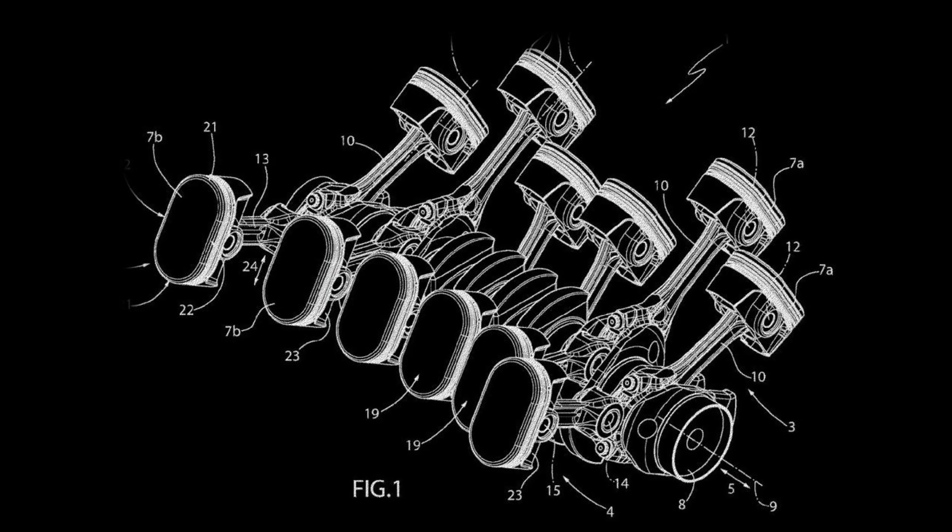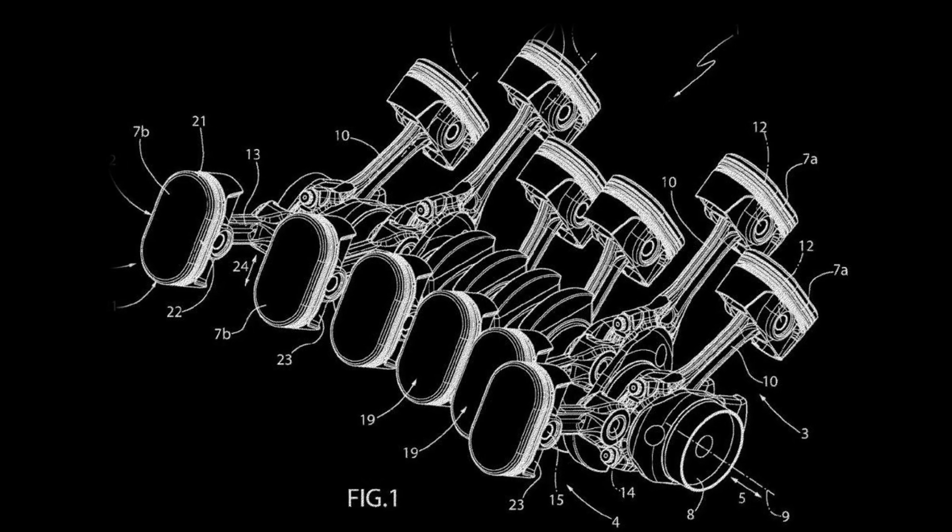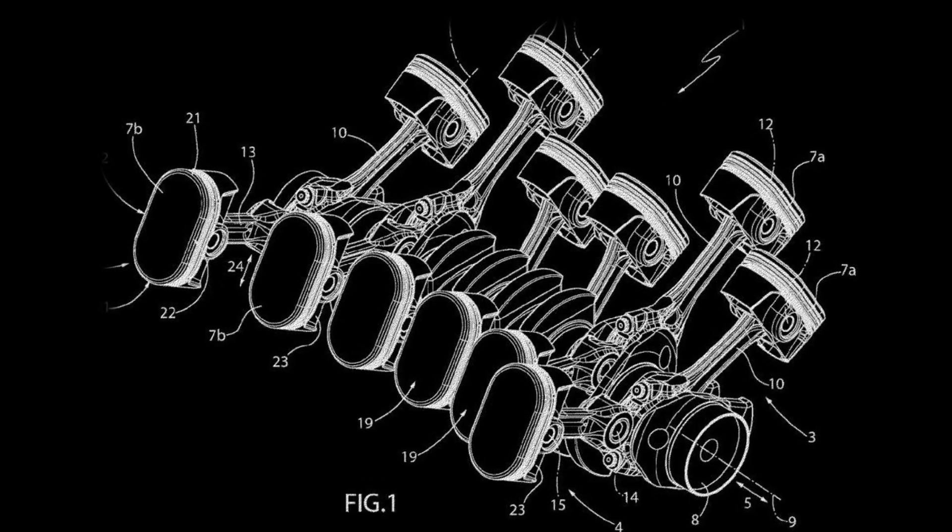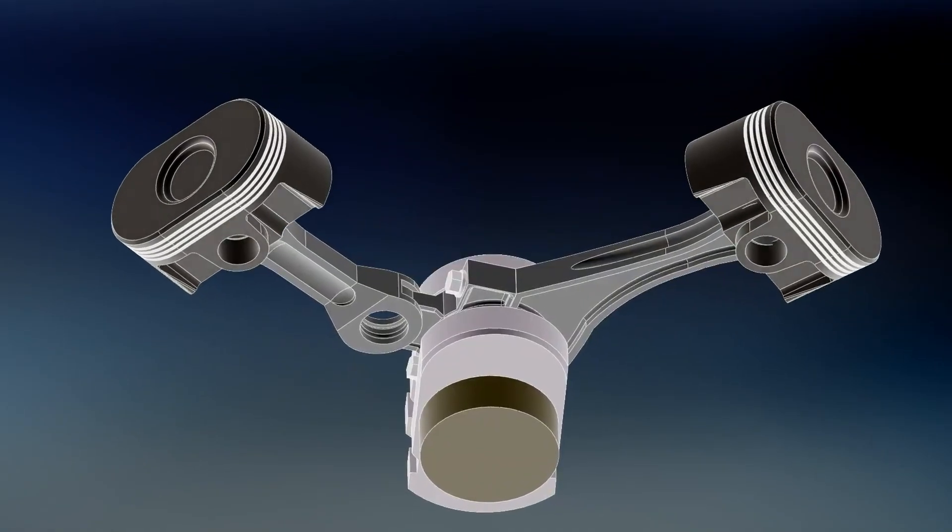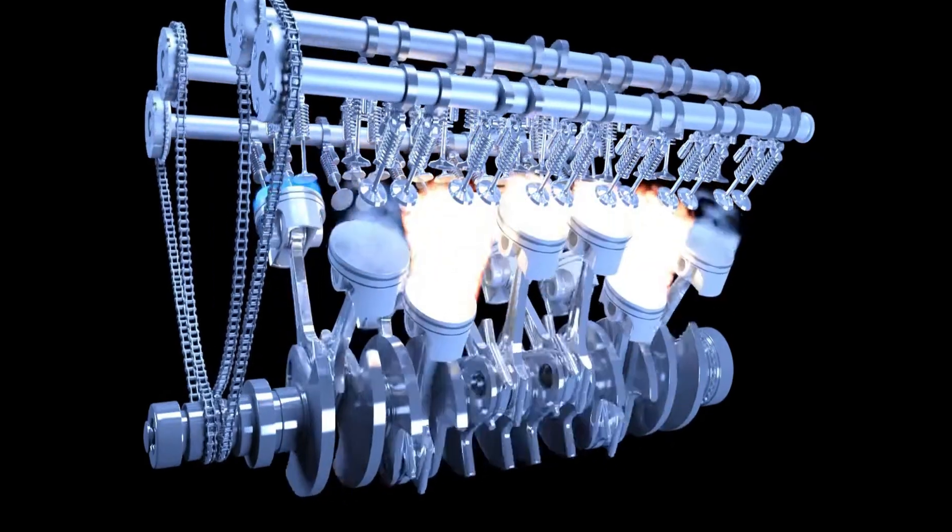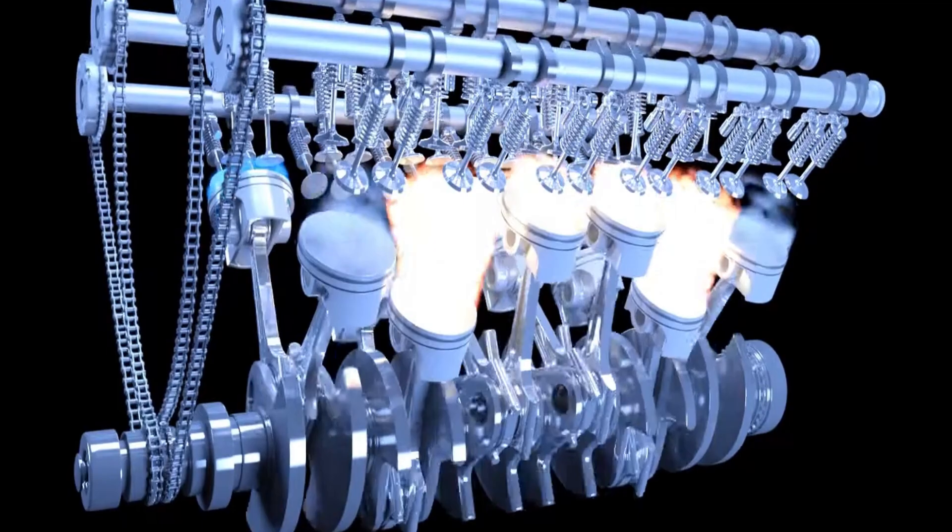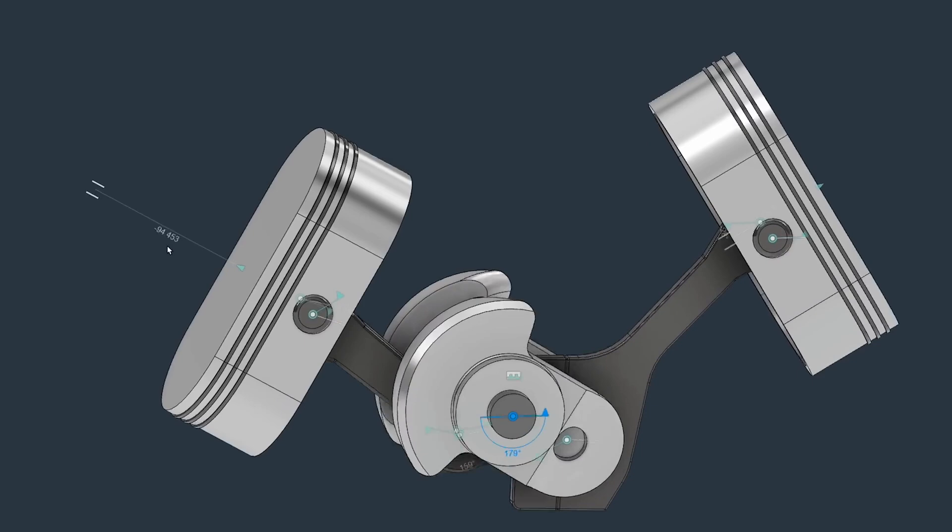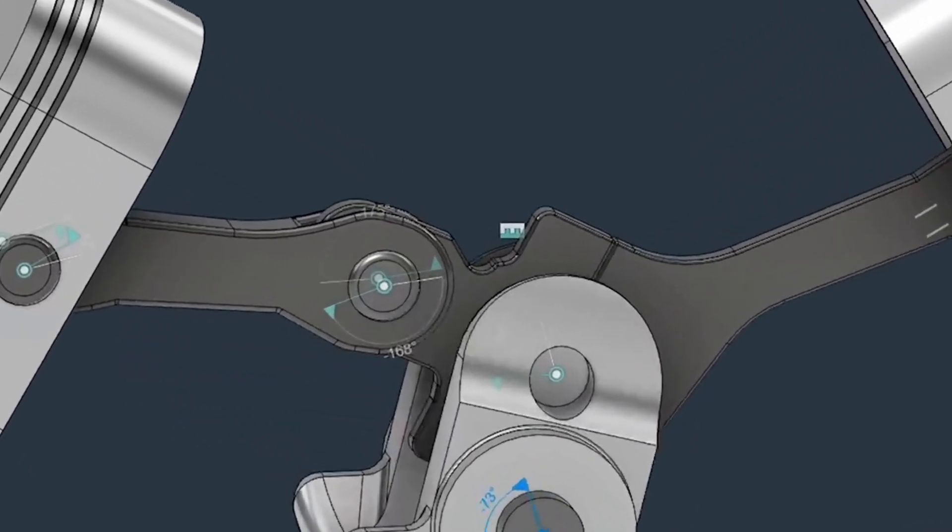As for Ferrari, the solutions in this patent are primarily focused on reducing the length of the engine. Therefore, unlike Honda, Ferrari has oriented the oval pistons 90 degrees differently. This allows the 12 pistons to be packed more compactly while maintaining the full engine volume. Additionally, instead of double connecting rods, Ferrari uses single connecting rods with chains. We'll revisit that later.